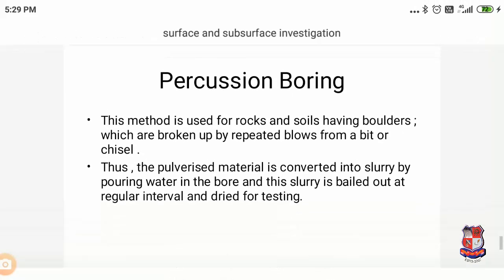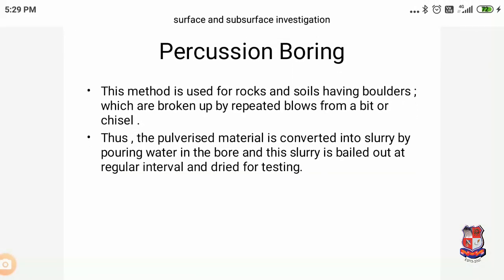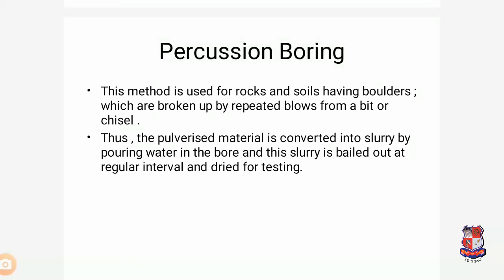Percussion boring is used for rocks and soils having boulders. These are broken up by repeated blows from a bit or chisel. The auger boring is for soft soil, wash boring is for slightly hard and sandy soil, while percussion boring is used for rocks and soils with boulders. The pulverized material is converted into a slurry by pouring water into the bore, and this slurry is bailed out at regular intervals and dried for testing.